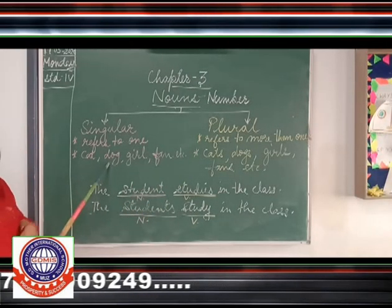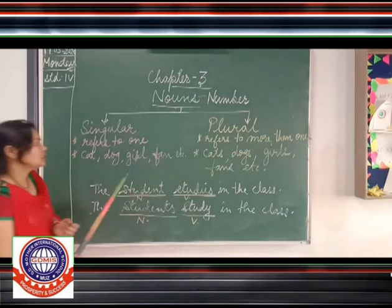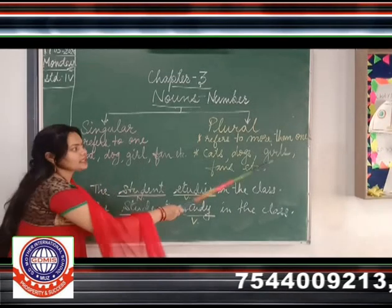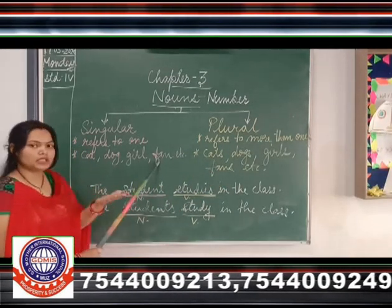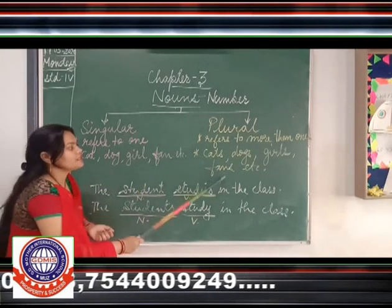Singular dog. When there is one dog we will say dog. But more than one we will say dogs. Girl. One girl we will say girl. More than one we will say girls. Fan. Singular fan. But when it is more than singular it is plural then we will say fans.